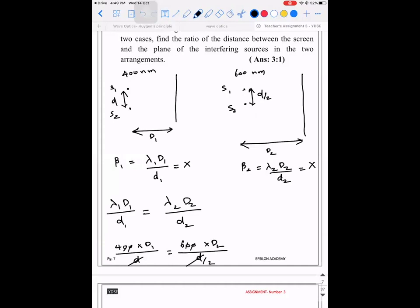So 0, 0 gone. 2 times, 3 times. So 2 will go. This 2 and 2 will get cancelled. So it implies d1 by d2 is equal to 3 divided by 1.